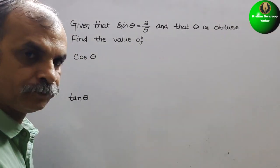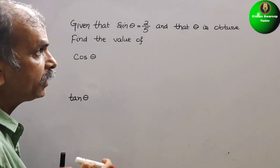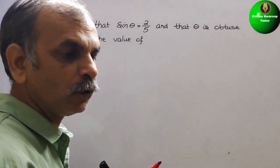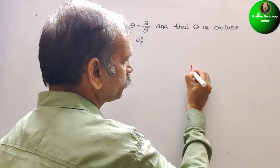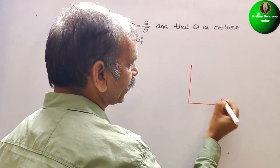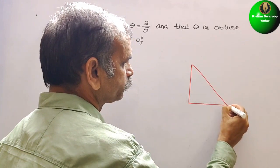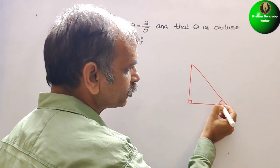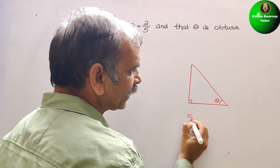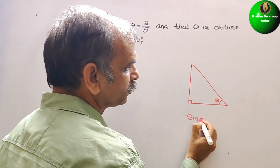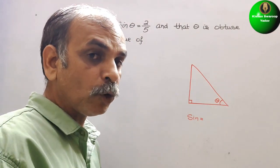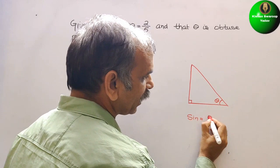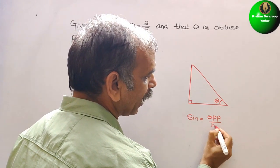Understand this. So here, what they have given is sin theta, so first we should know what is sin theta. So suppose this is your right angle triangle. This is your 90 degree and here comes your theta. We know that sin is opposite by hypotenuse, so here we will write opposite by hypotenuse.